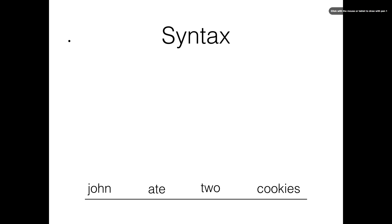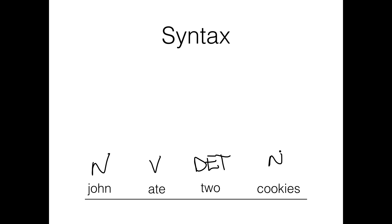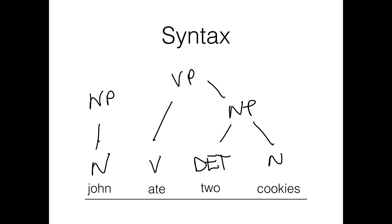A key part of this is that each word has a different syntactic category, or part of speech. For example, John is a noun, ate is a verb, two is what we call a determiner, and cookies is a noun. Syntax tells us how these categories can combine to form larger categories, like noun phrase or verb phrase, and also how these larger categories combine with each other to make whole sentences.